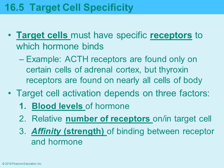The target cell must have the specific receptor to which the hormone can bind. How you activate the target cell depends on three things: first, how many receptors are on the target cell — having 50 receptors versus only one per cell makes binding more likely.